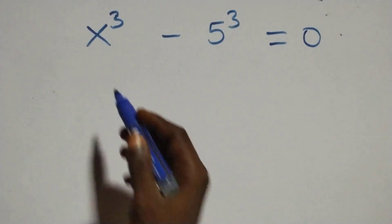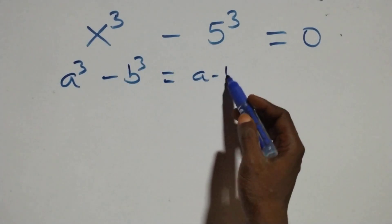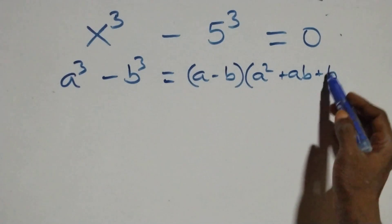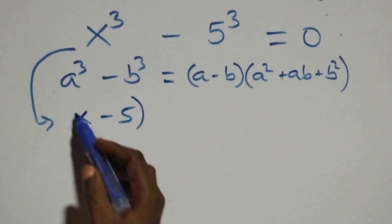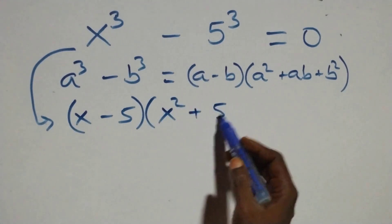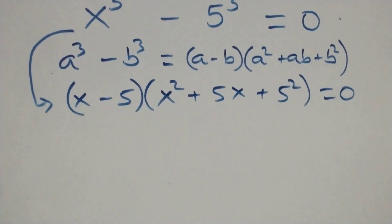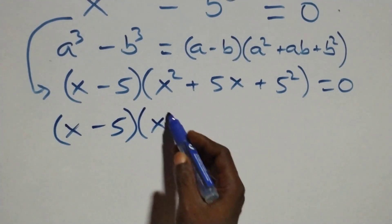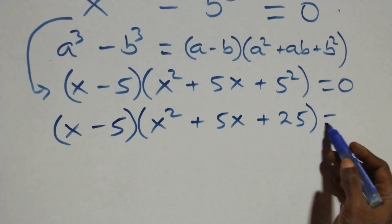Solving from the second case, this follows from a cubed minus b cubed, which is the same as a minus b, into brackets, then open bracket a squared plus ab plus b squared. So all we have becomes x minus 5, into brackets, then open bracket x squared plus 5x plus 5 squared, close bracket, equals to 0. That is the same as x minus 5, into brackets, then open bracket x squared plus 5x plus 25, close bracket, equals to 0.